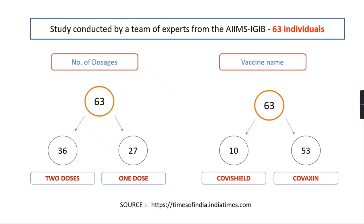A study was conducted by teams of experts from AIIMS and IGIB — the Institute of Genomics and Integrative Biology. They procured 63 individuals who are symptomatic with the Delta variant and divided their study into two categories: number of dosages and vaccine name. Among the 63 individuals, 36 had taken two doses of vaccine and the remaining 27 had taken only one dose.